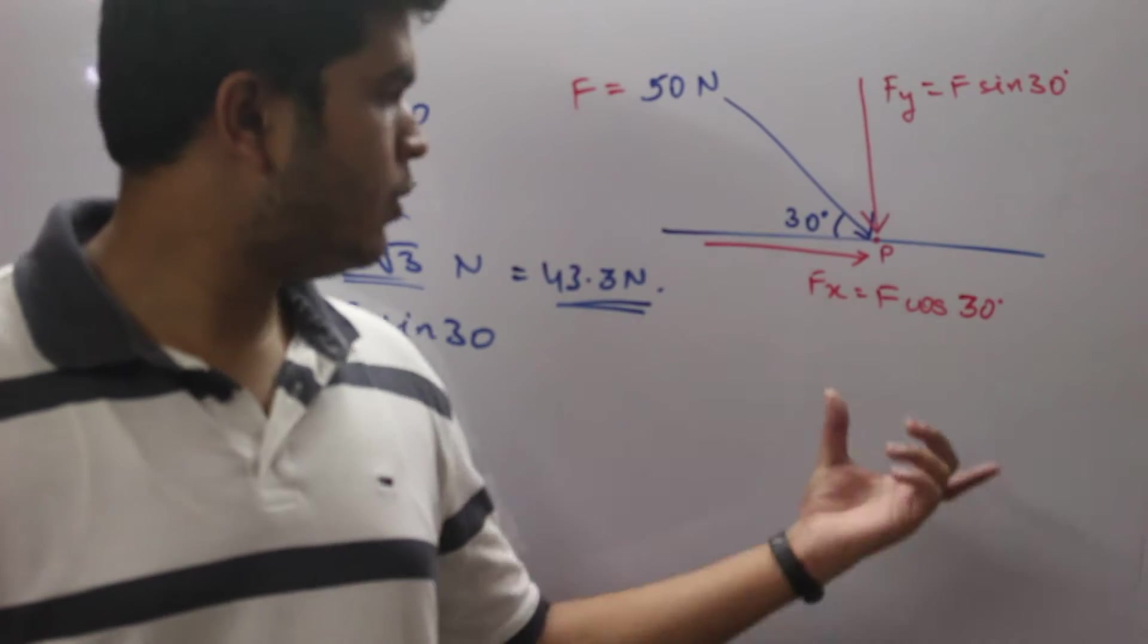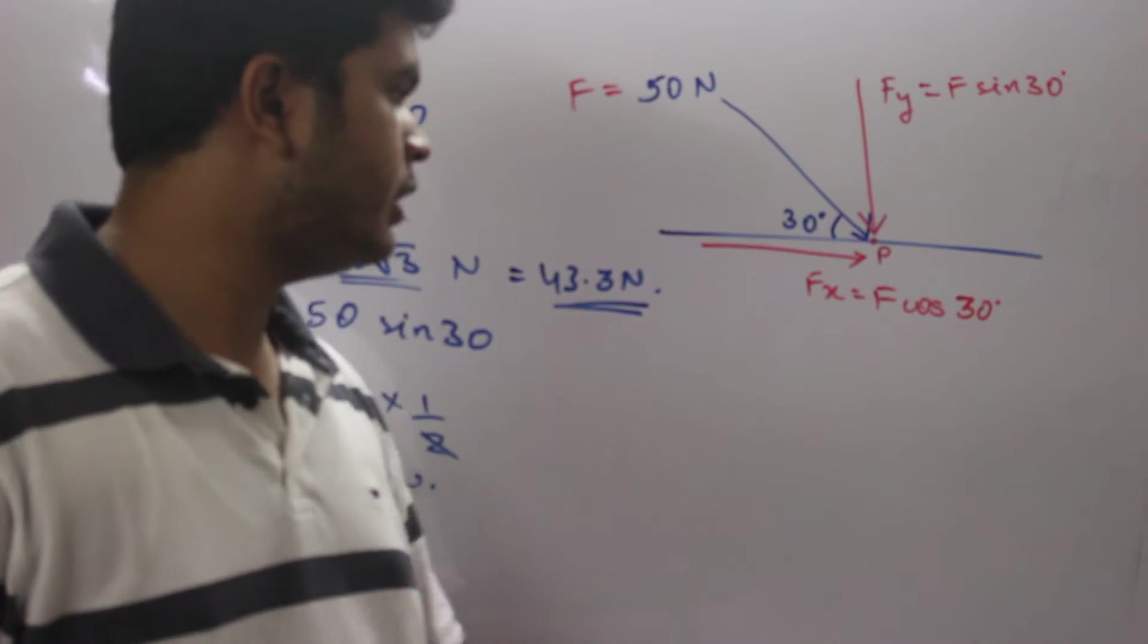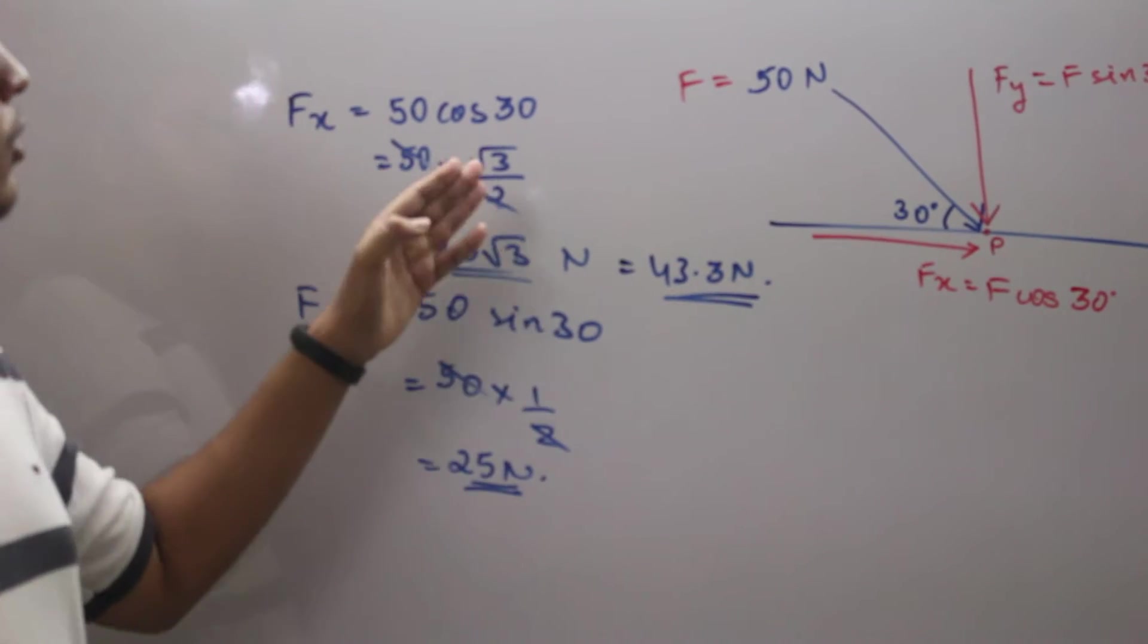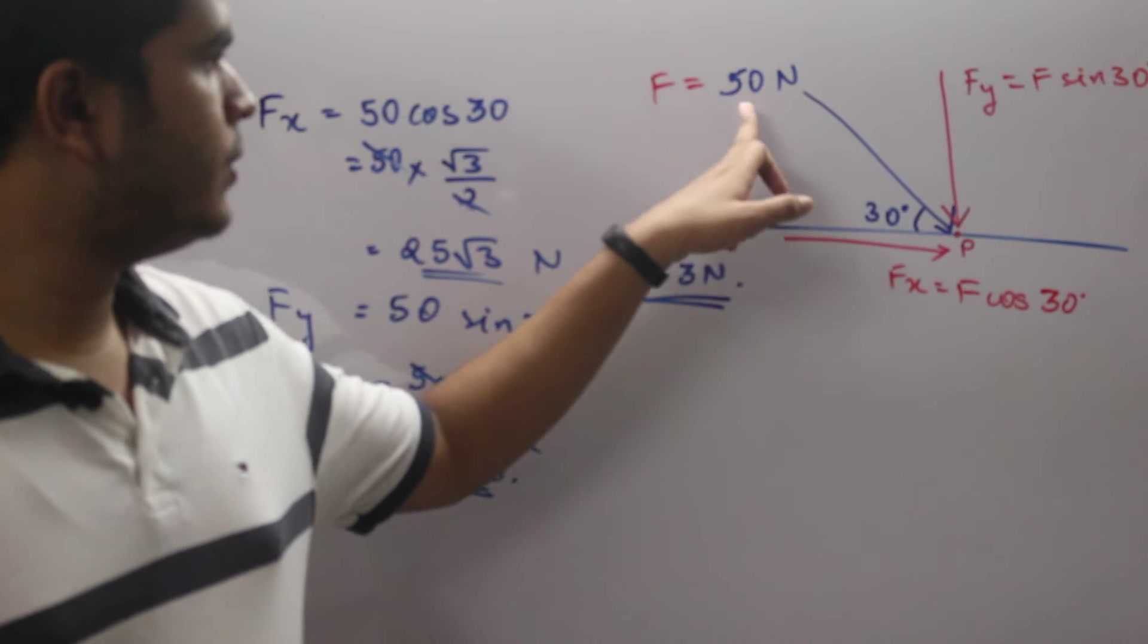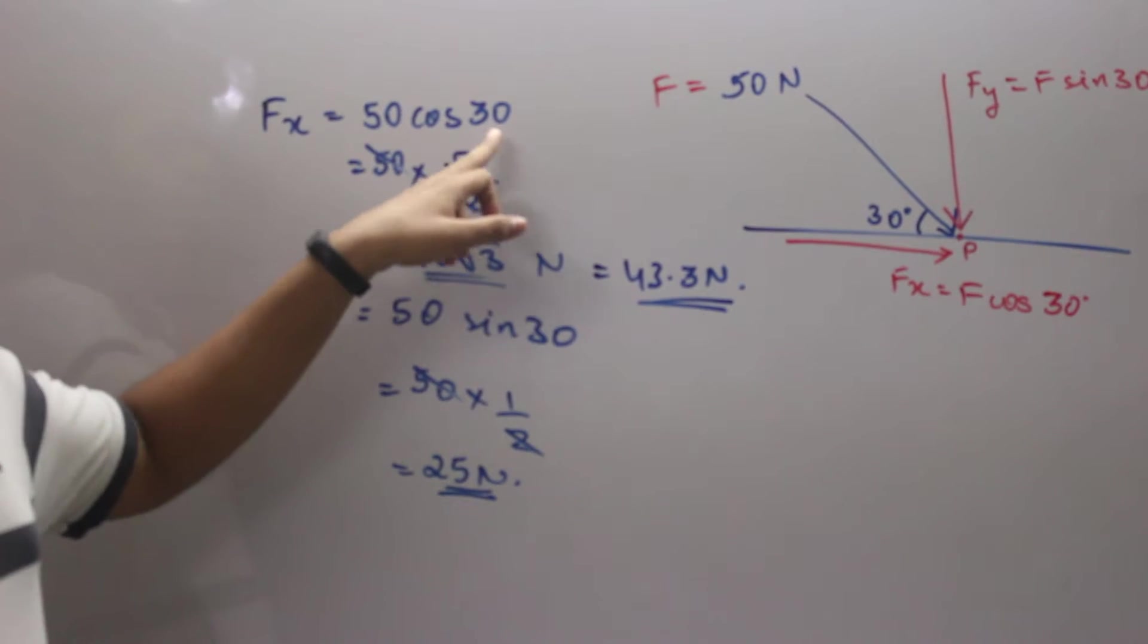F_x will be given by F cos 30 degrees. F_x will be 50 cos 30 degrees because the value of F is 50 Newtons. The value of cos 30 is root 3 by 2.